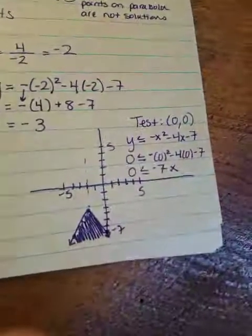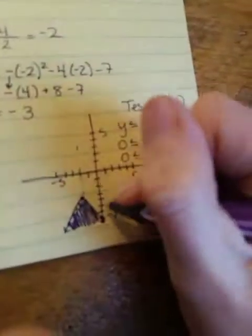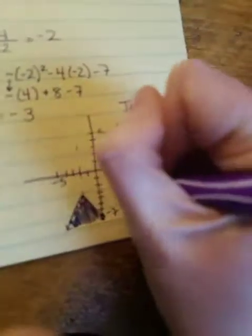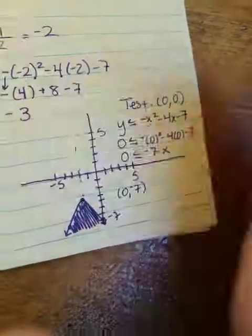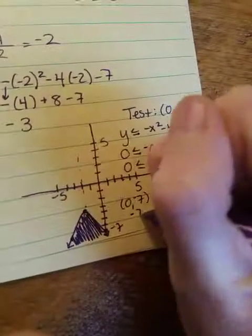And I mentioned that at the start of this video. Let me just show you that and what I mean. So hopefully you agree that the point 0, negative 7 is on the graph. It's on the parabola.